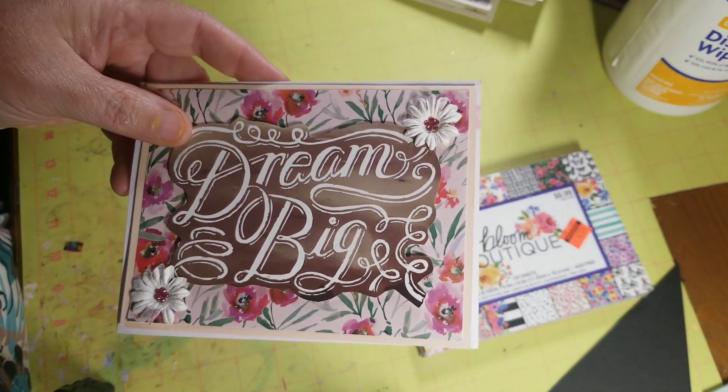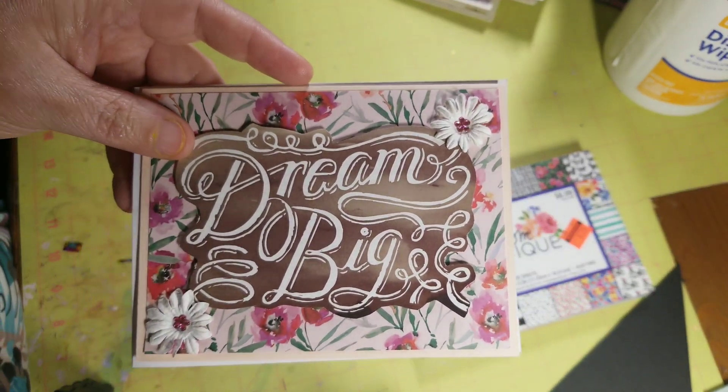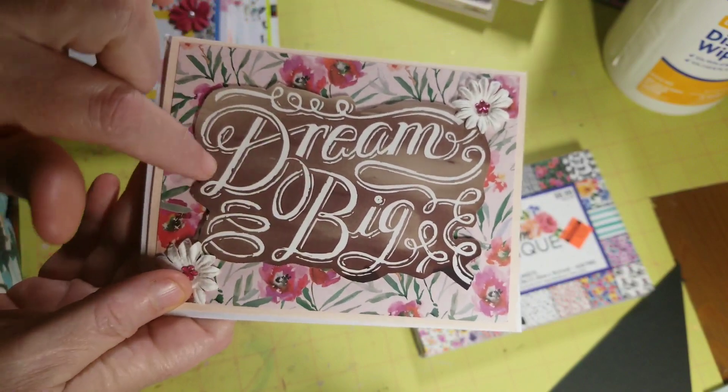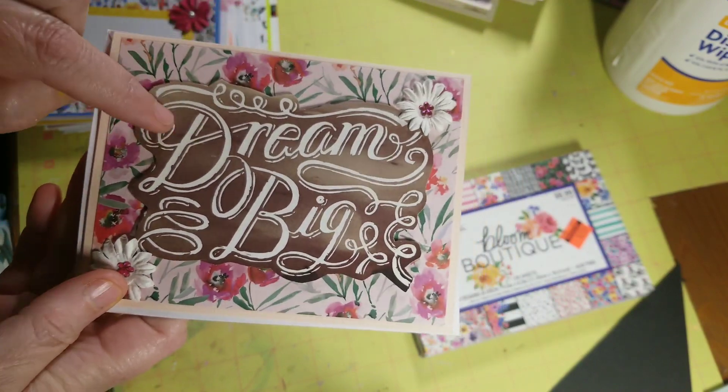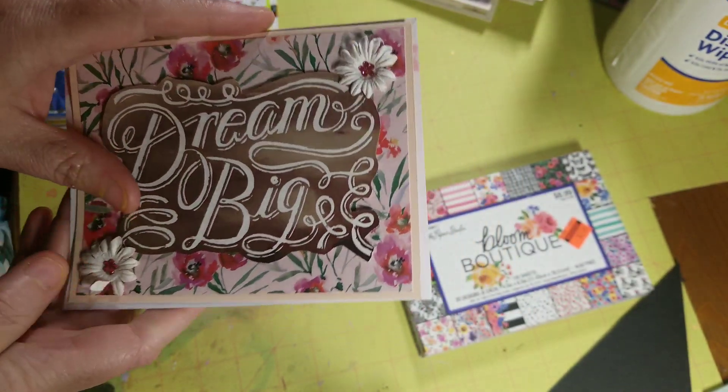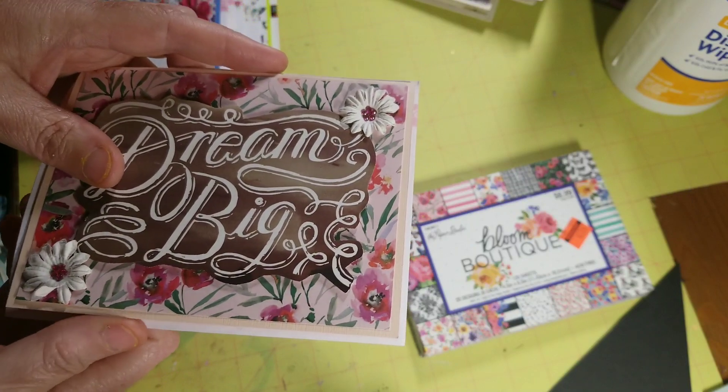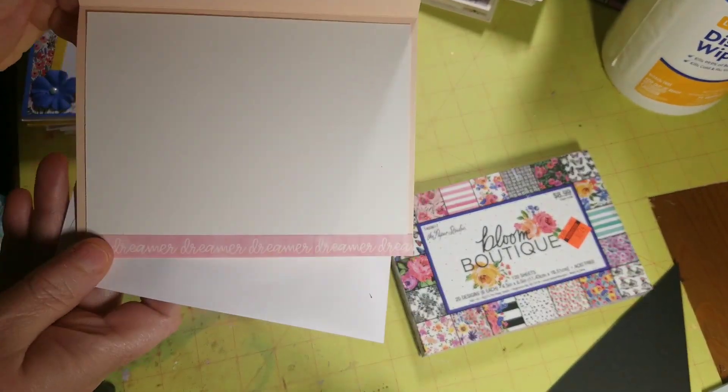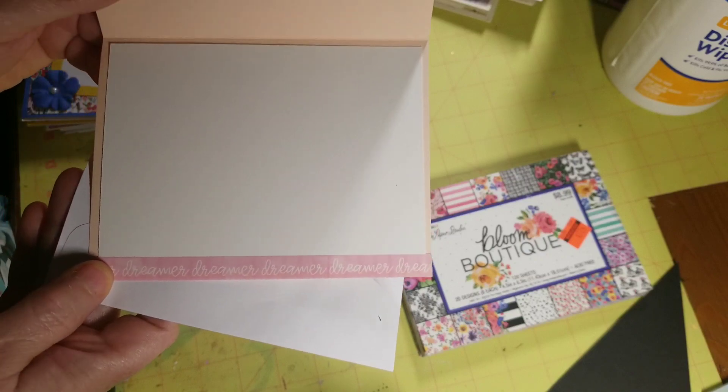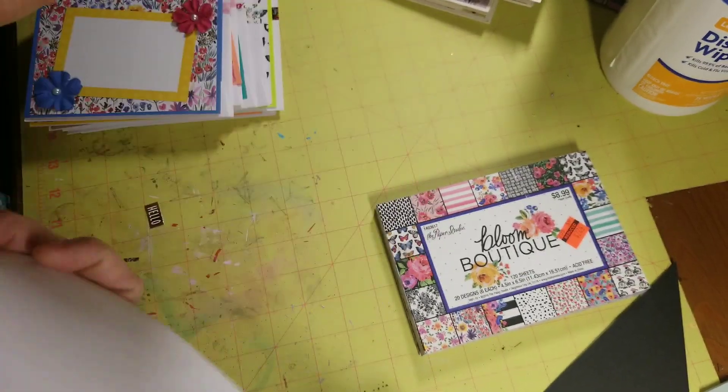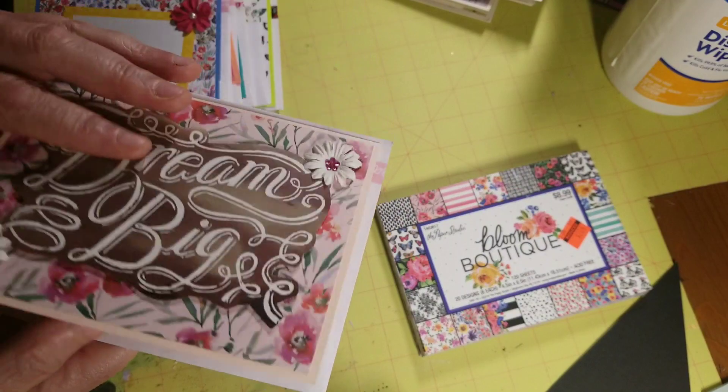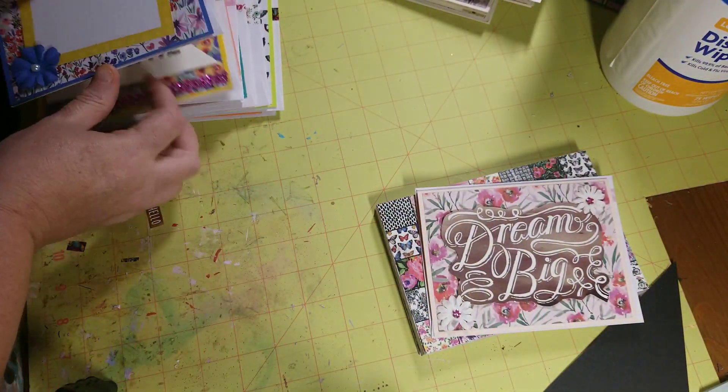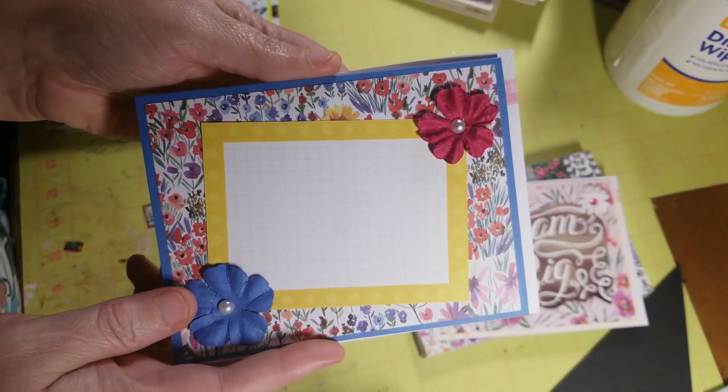Flowers too. So there is this one and this Dream Big came from a paper pad and it was on the cover so I ended up cutting it out and saving it. You can see I used washi tape on the inside, got washi tape on the envelope. Y'all, I'm trying to use that washi tape.